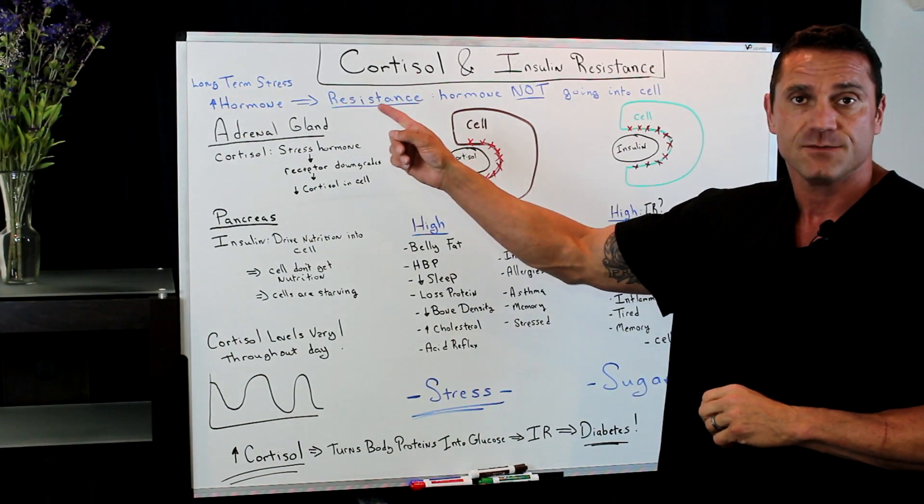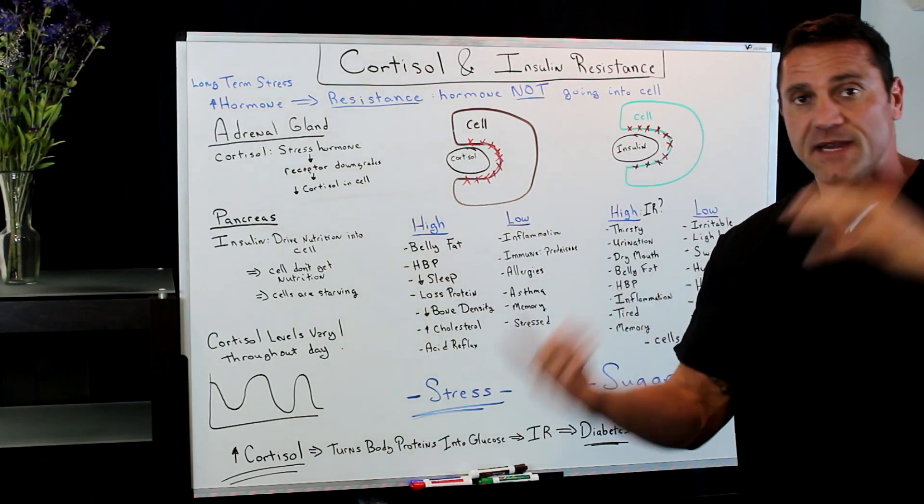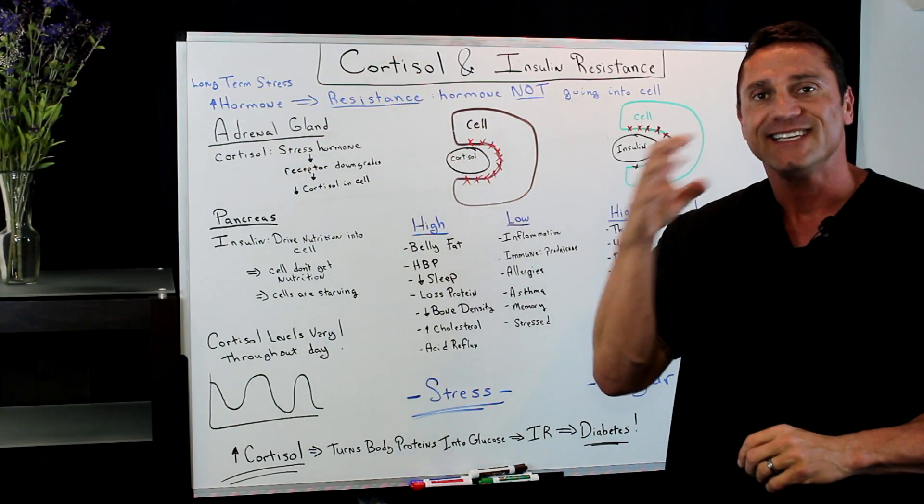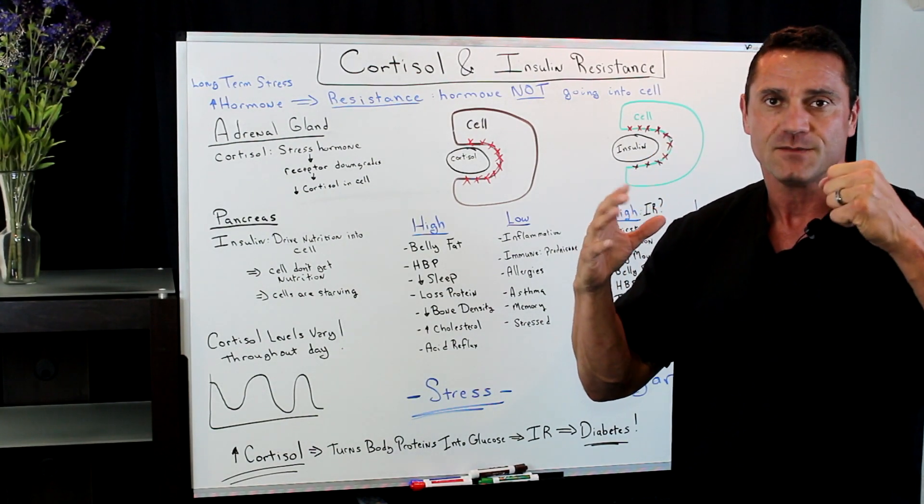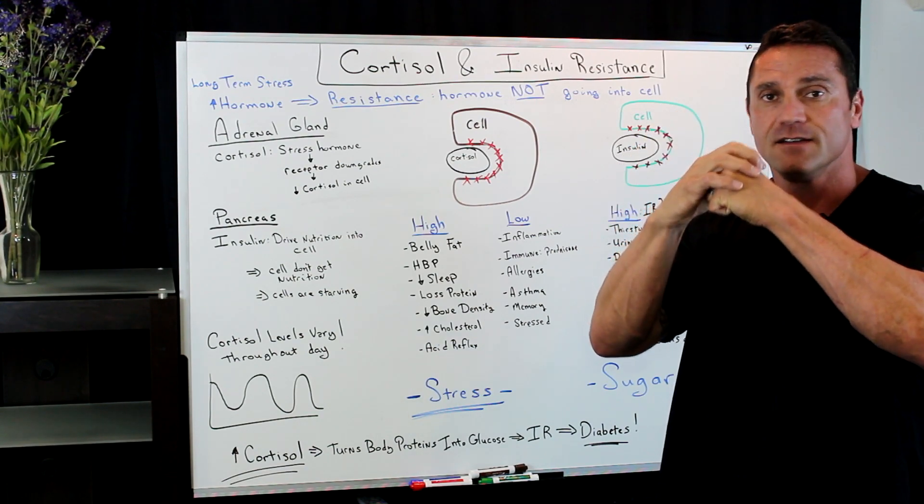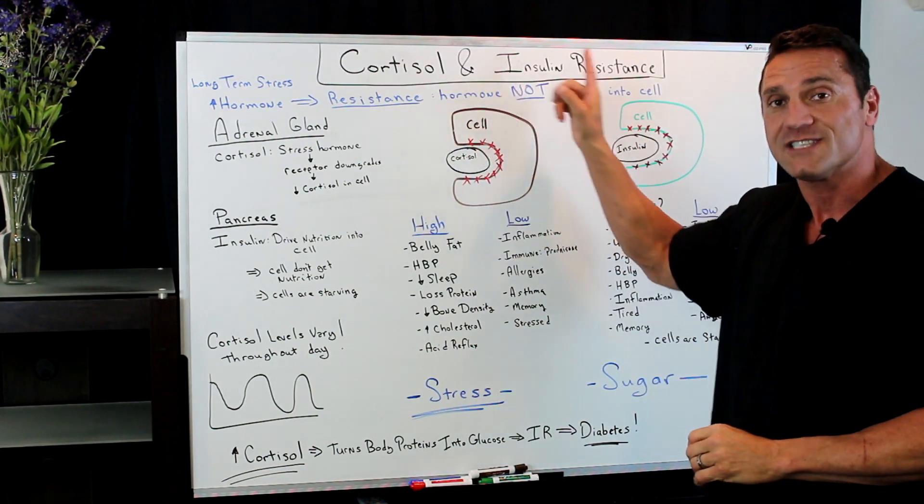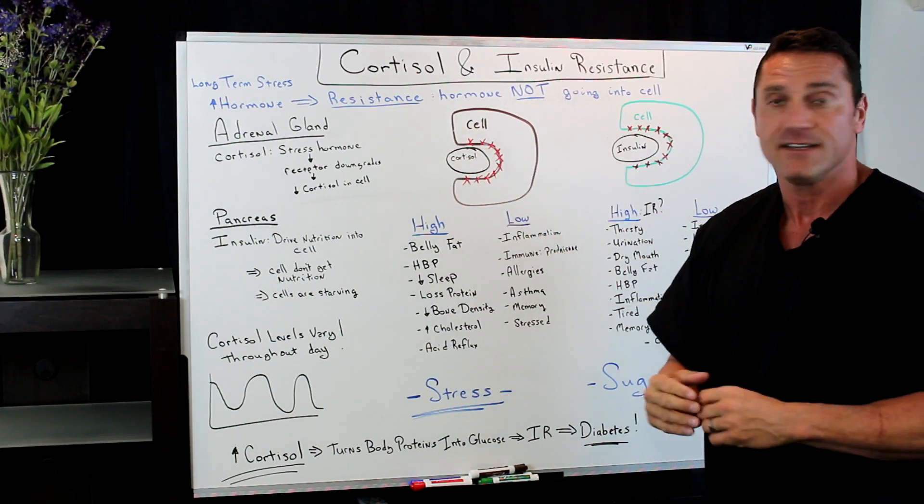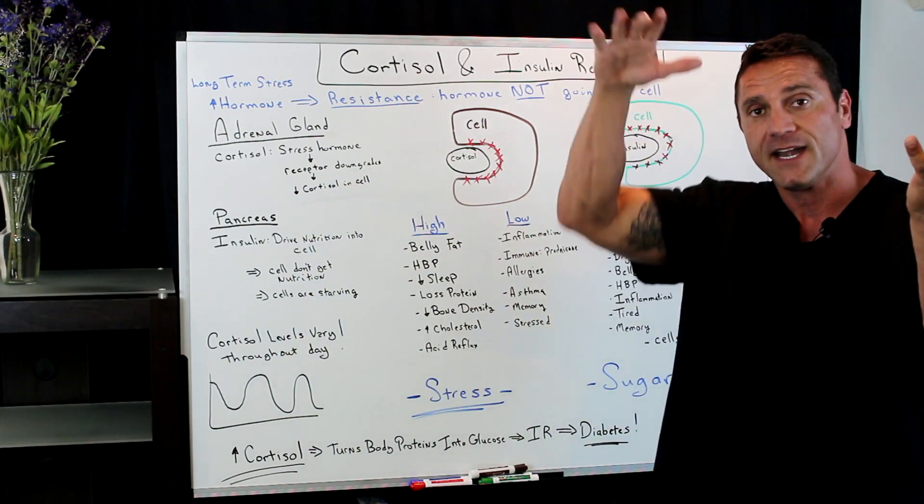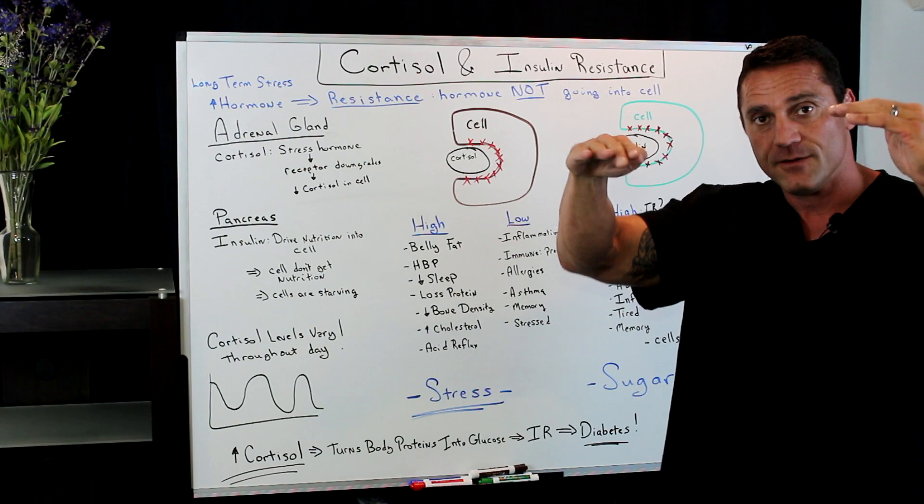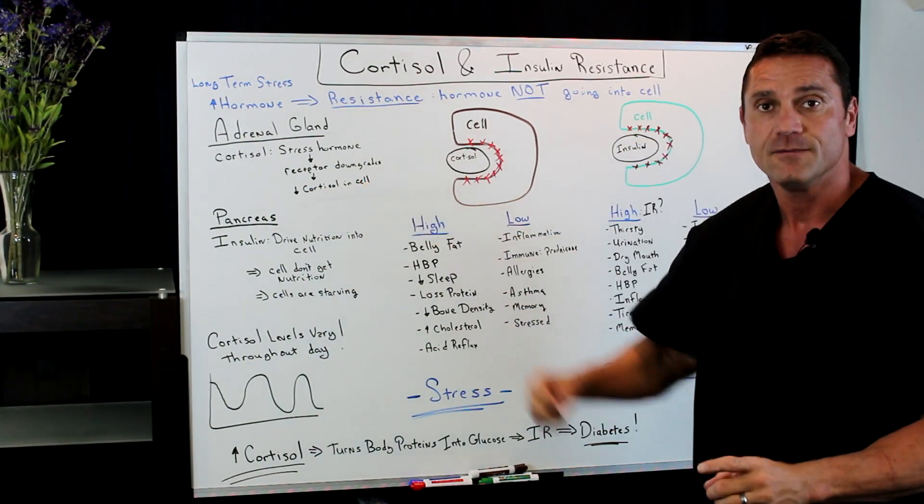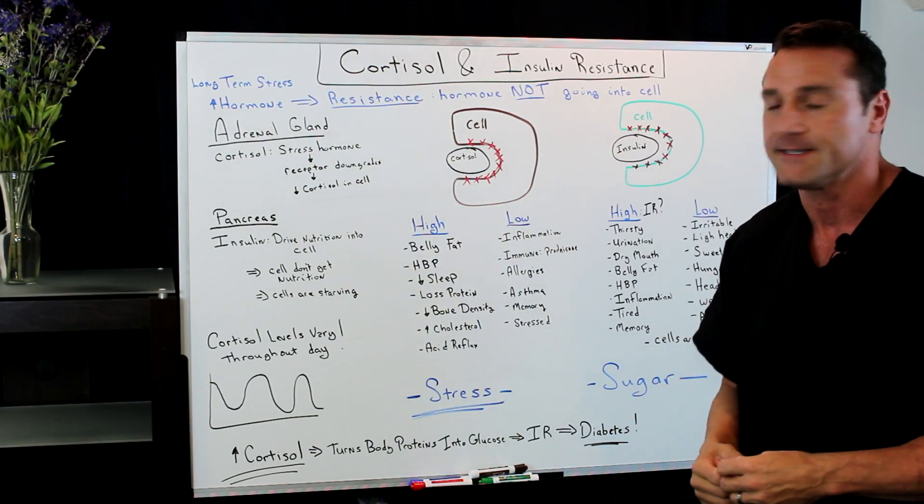In long-term stress, when you have chronic stress, cortisol is being dumped into the system. What happens is the cell becomes resistant. It's like a lock and key method. When too much cortisol is flowing around the cell in the bloodstream, it doesn't get into the cell because the cell shuts down. The hormone is not going into the cell. The receptor downgrades. When you have too much of something, the body wants to downgrade because the body always wants to be in a steady state. You don't have cortisol going into the cell, but you have too much cortisol flowing around the blood system.